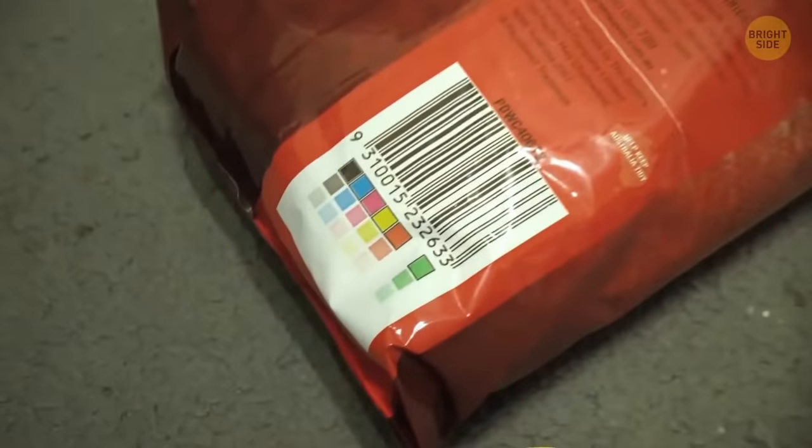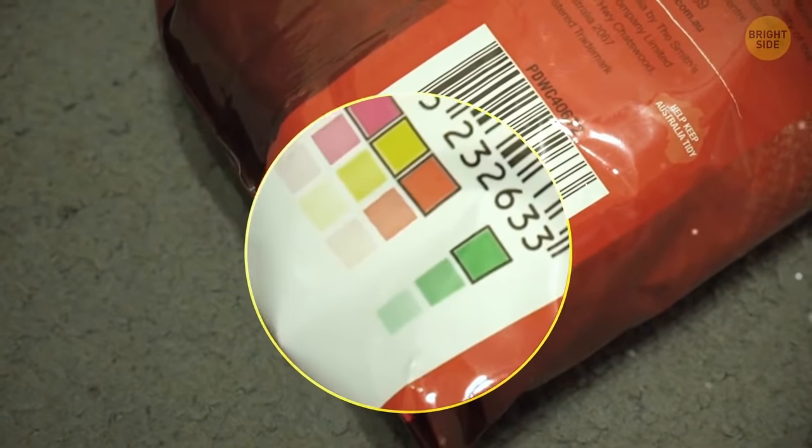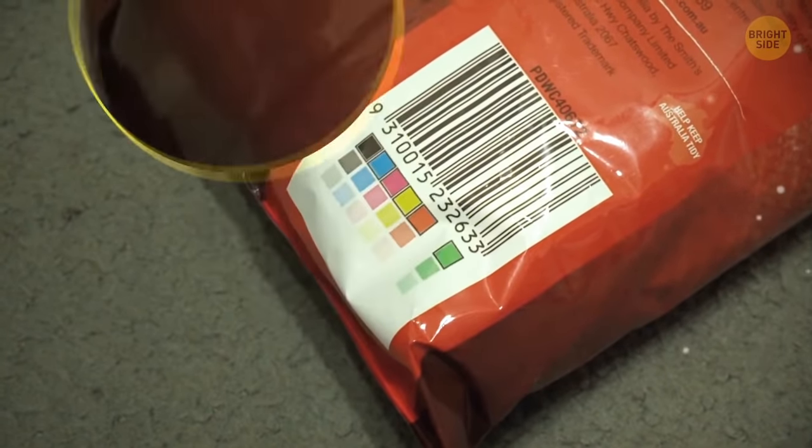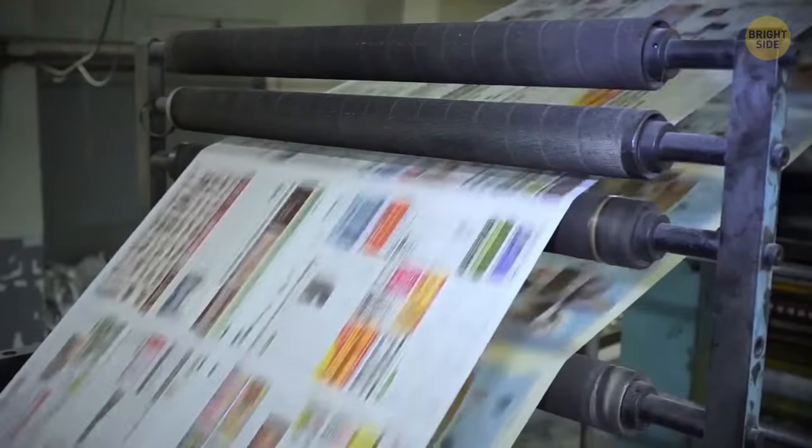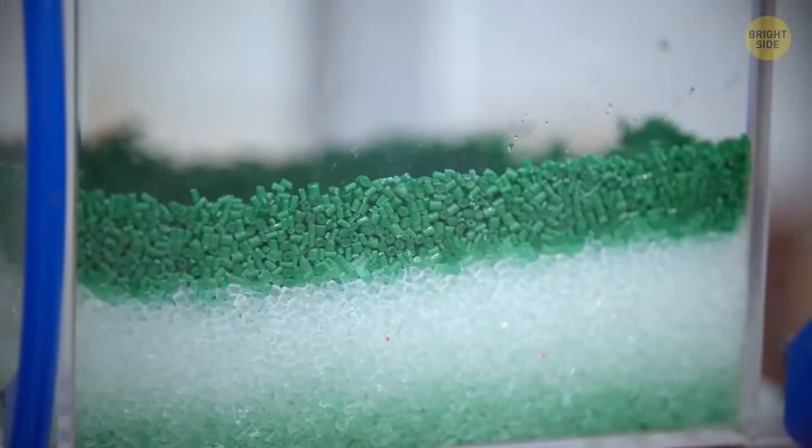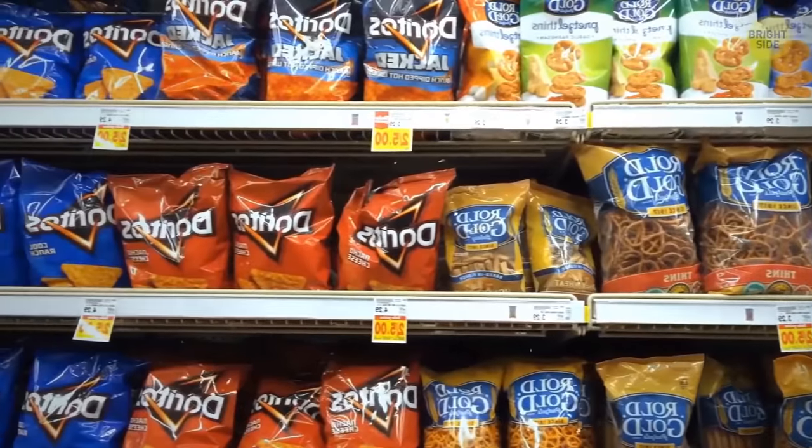Color dots on chip bags aren't as useful as those on the windshield, but they have a purpose, too. Manufacturers need them to control the package color and show what ink color was used on the package.